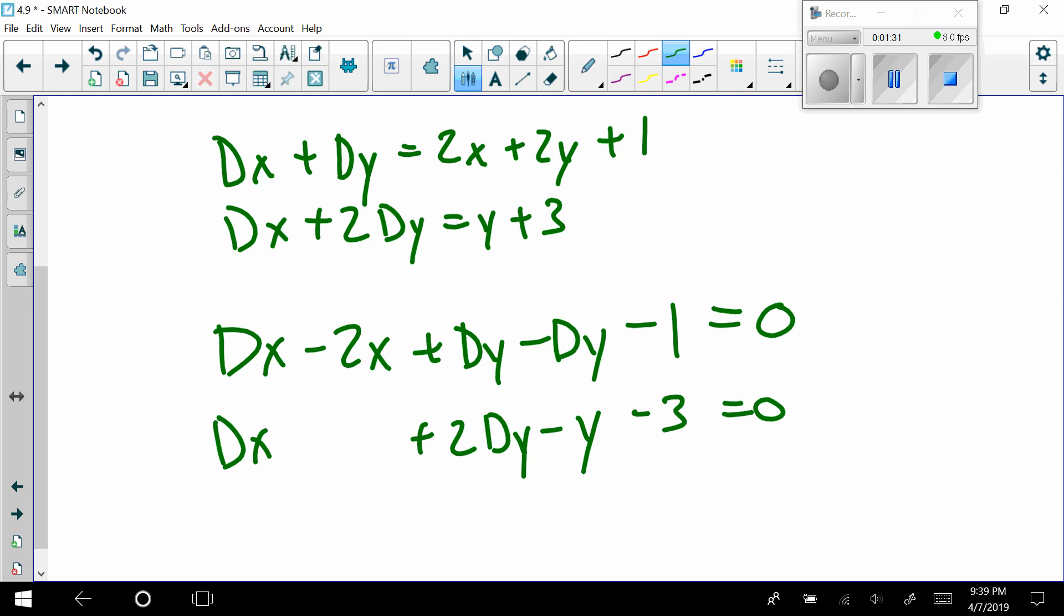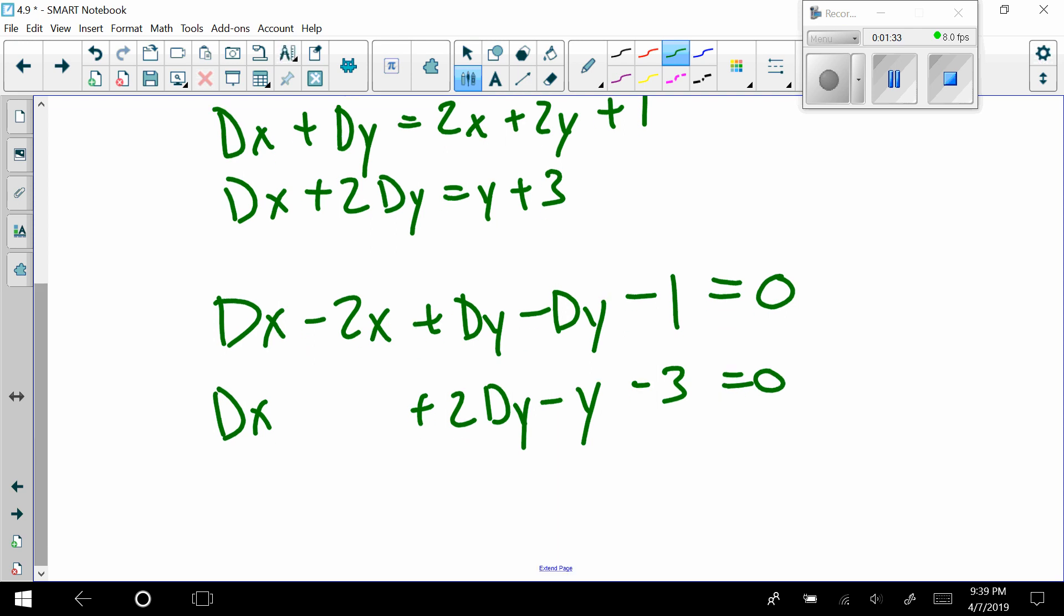No more x's here, and then I have plus 2dy minus y, not plus but minus 3. Factoring like we've done before, this is (D minus 2)x plus (D minus... I don't know why I put that. I had a nice long pause there because I wasn't sure.